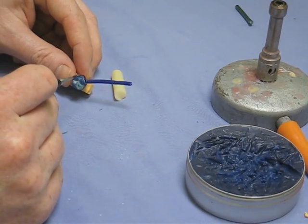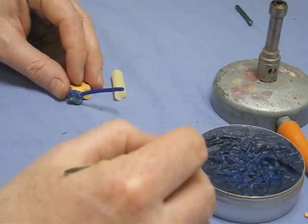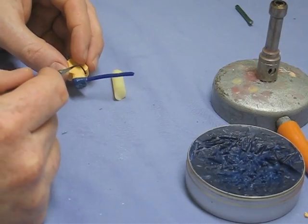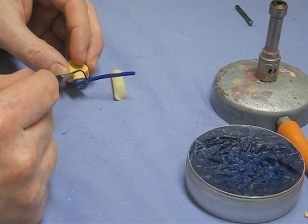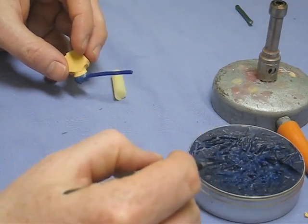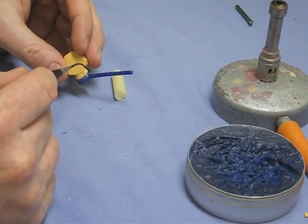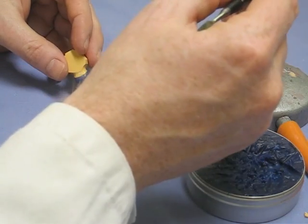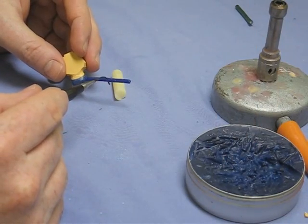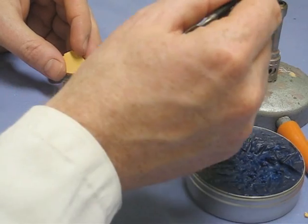So we're just making the wax nice and flush into the wax pattern so we don't have any creases in the wax because they'll come out as positives in the refractory material which are likely to break off when the metal gets shot in.